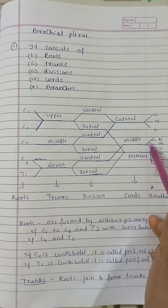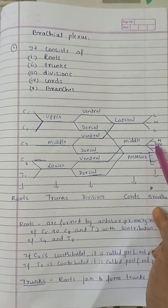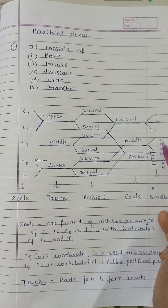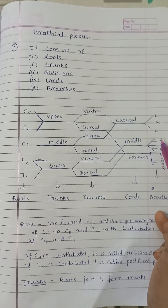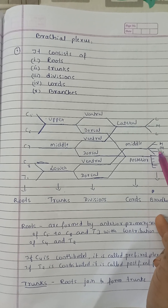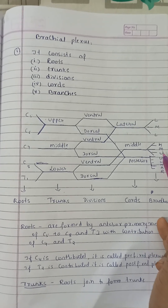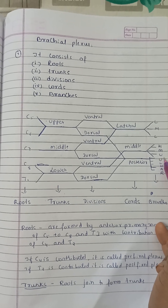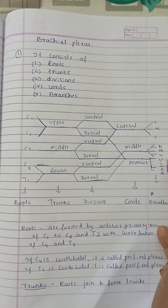The medial cord gives rise to five nerves. The mnemonic is 4MU: the four M's stand for medial cutaneous nerve of arm, medial cutaneous nerve of forearm, medial pectoral nerve, and medial root of the median nerve. U stands for the ulnar nerve.